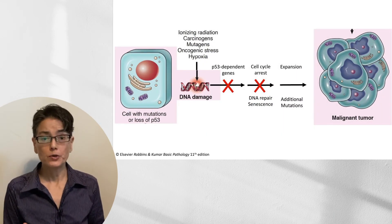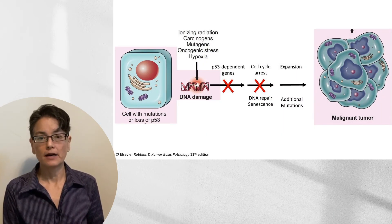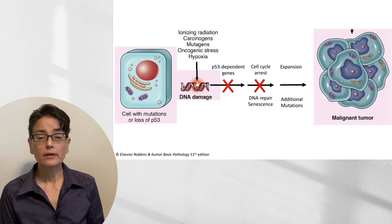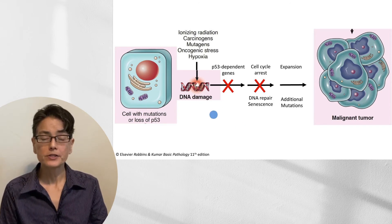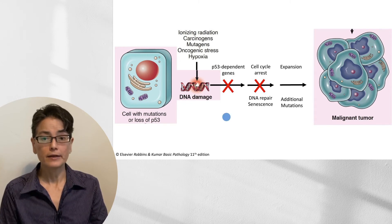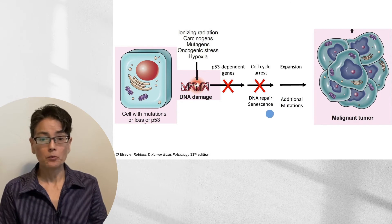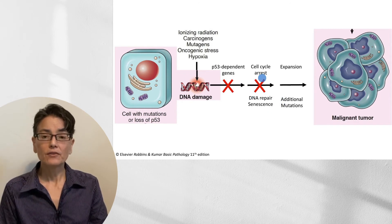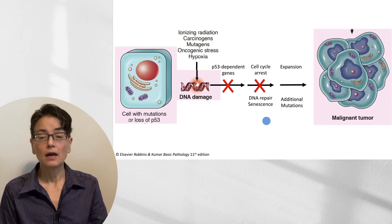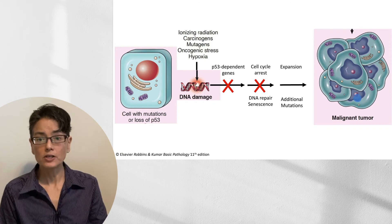What if, for some reason, P53 is not functional? We'll have our DNA damage, but we're not going to have P53-dependent genes being upregulated. We're not going to go into cell cycle arrest, our DNA won't be repaired, we won't go into senescence, and the cell will continue to progress through the cell cycle and expand. This is going to result in additional mutations and eventually the possibility of a malignant tumor.